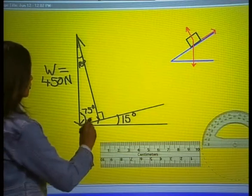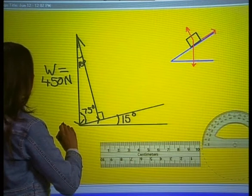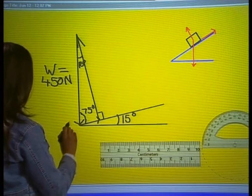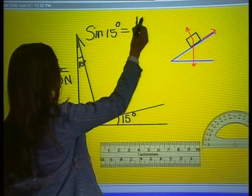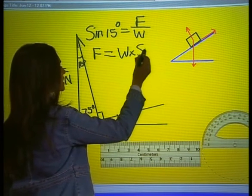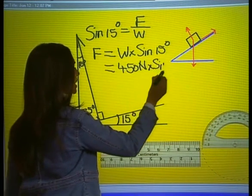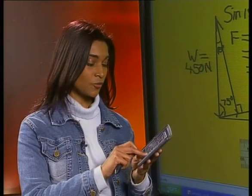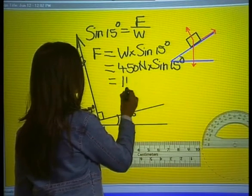Now let's apply trigonometry to find the magnitude of the frictional force and the normal force acting on the loaded crate where it is stationary on the inclined plane. The frictional force is the force vector that lies opposite the angle of 15 degrees in this triangle, and it acts up along the slope. To find the magnitude of the frictional force we use the sine ratio: sine of 15 degrees equals F the frictional force over weight W. Making F the subject: F equals W multiplied by sine of 15 degrees, which is 450 N multiplied by sine of 15 degrees, giving us an answer rounded off to the nearest newton of 116 N.